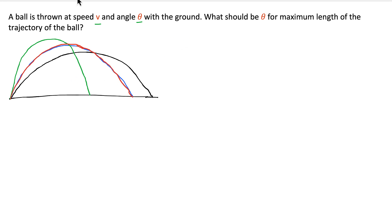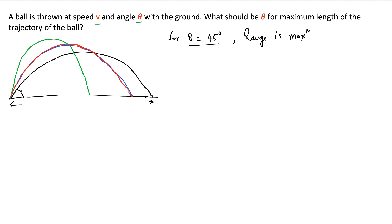We already know that for theta equal to 45 degrees, the range is maximum. Range is defined as the horizontal distance the ball covers, and this is maximum at 45 degrees. Now the same question, but we want to find the angle for which the length of the trajectory of the ball is maximum. Let's say the angle is theta. At any point after time t, with x-axis and y-axis defined, the ball is at point P with coordinates x and y.